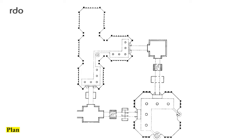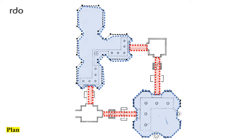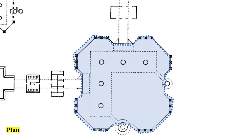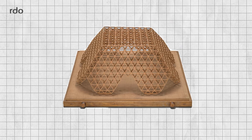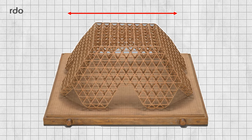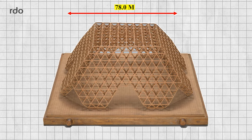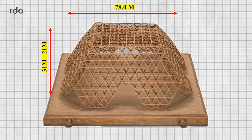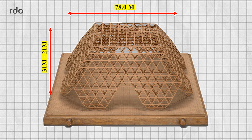Raj Rawal leaned on the geometric and proposed four halls linked by ramps. The largest of these halls is the Hall of Nations. The main pavilion of the Hall of Nations has a clear span of 78 meters, with height varying from 31 to 21 meters.